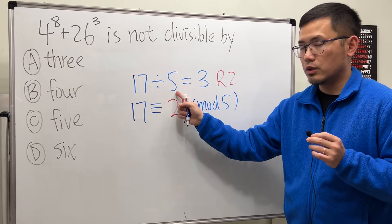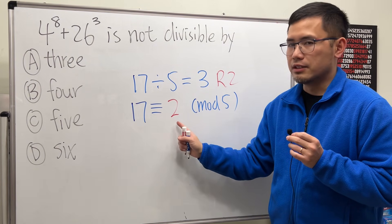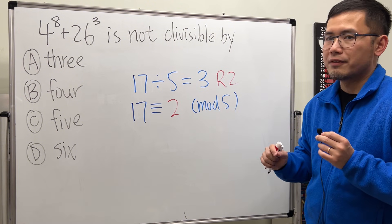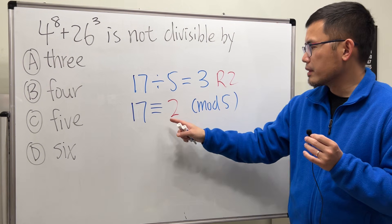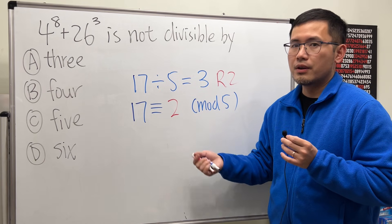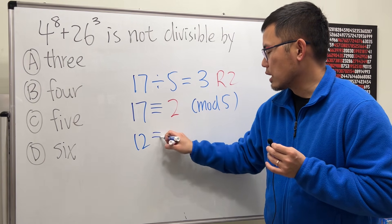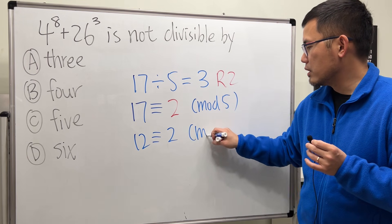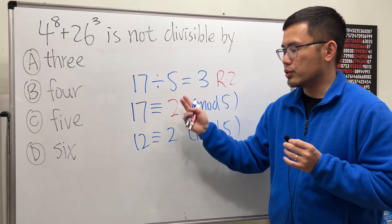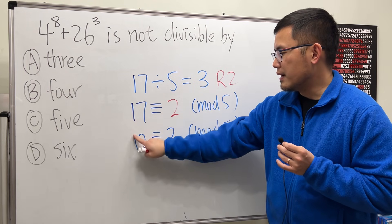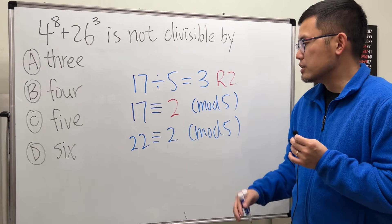Note that mod 5 refers to dividing by 5. This congruence just means they have the same remainder when divided by 5. You can think of another number congruent to 2 mod 5 — for example, 12 is also congruent to 2 mod 5, because 12 divided by 5 is 2 with remainder 2. And in fact, 22 is the same thing, and so on.